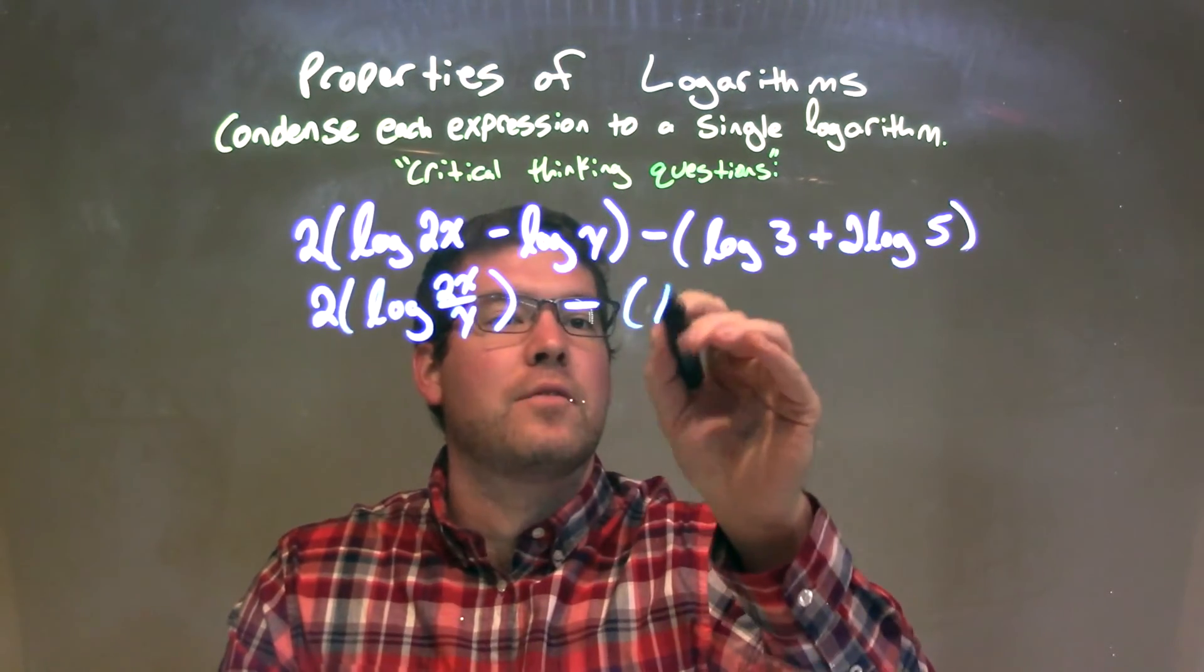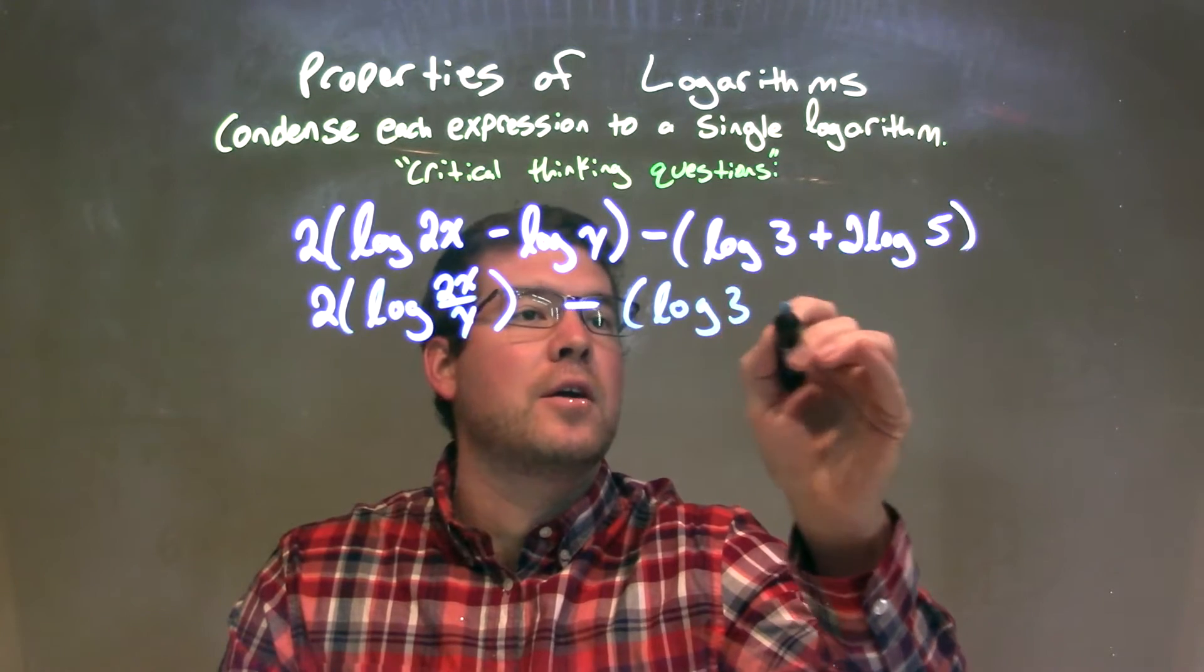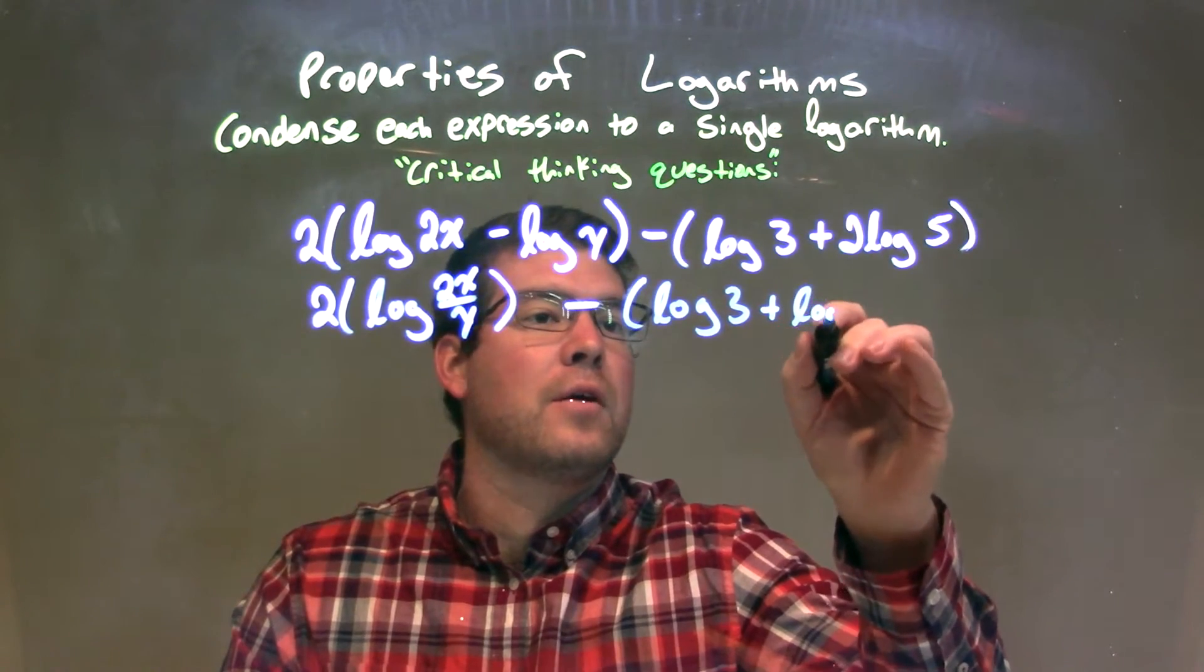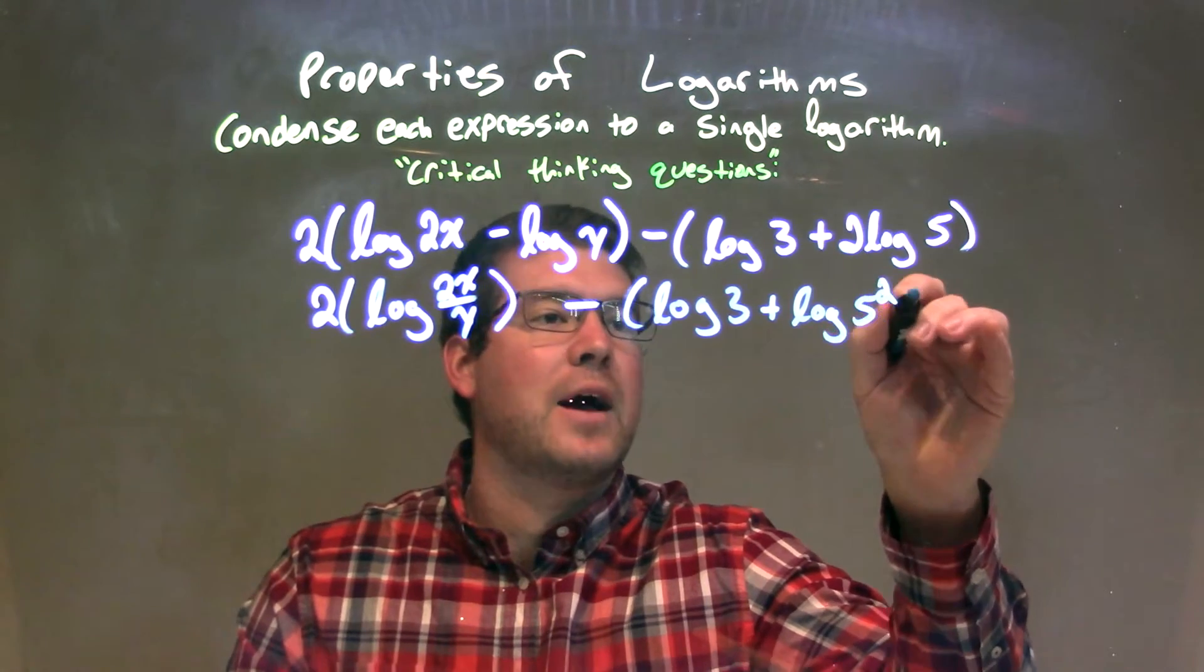So we have the log of 3 here, but that 2 can come to the power of the 5, so plus log of 5 to the 2nd power.